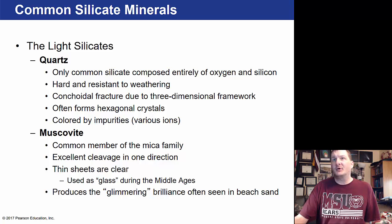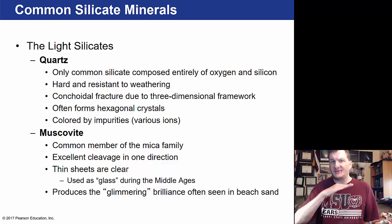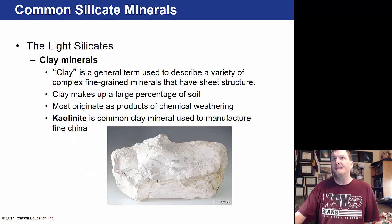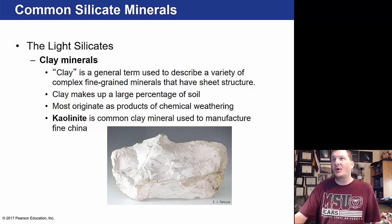Muscovite is a common member of the mica family, with excellent cleavage in one direction — it slices off thin and clear, producing a glimmering or shimmering brilliance often seen in beach sand. Clay minerals are also light silicates — kaolinite is a common clay mineral used to manufacture fine china, and clay makes up a large percentage of soil.